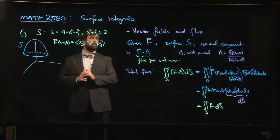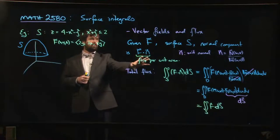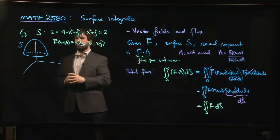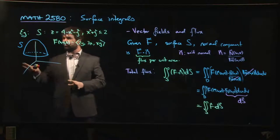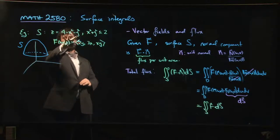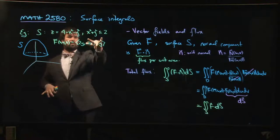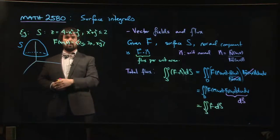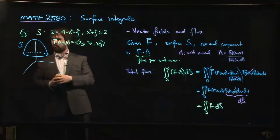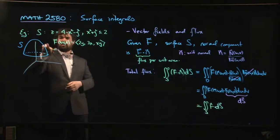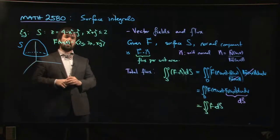Okay, so here's a quick example using this setup for integrating a vector field over a surface. Here's our surface, it's the part of this paraboloid where x squared plus y squared is less than or equal to 2. So that means z is between 2 and 4, we basically got this dome shape.